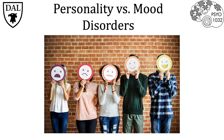First we have to understand the fundamental differences between personality disorders and mood disorders. A personality disorder is a maladaptive and inflexible pattern of cognition, emotion, and behavior within an individual. Another way to put this is that a personality disorder is a fundamental difference in how a person experiences or deals with emotion, how they interact with others, and how they think about problems or interpret situations. It's important to note that personality disorders generally develop in late childhood and adolescence.